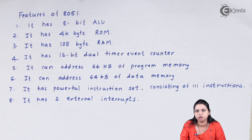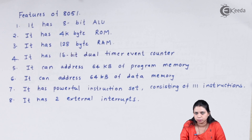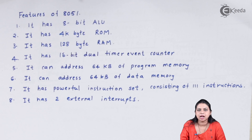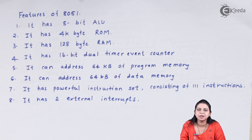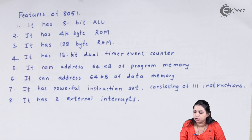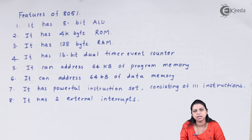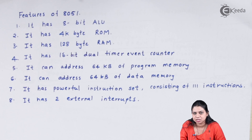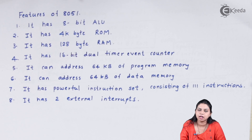So the 8051 microcontroller has an 8-bit ALU. Number two, it has 4 kilobytes of ROM. Number three, it has 128 bytes of RAM. So the ROM is 4 KB and RAM is 128 bytes — you can see how limited memory it has compared to a home microprocessor. Next, it has a 16-bit dual timer/event counter. It can address up to 64 KB of program memory and up to 64 KB of data memory. It also has a powerful instruction set consisting of 111 instructions.